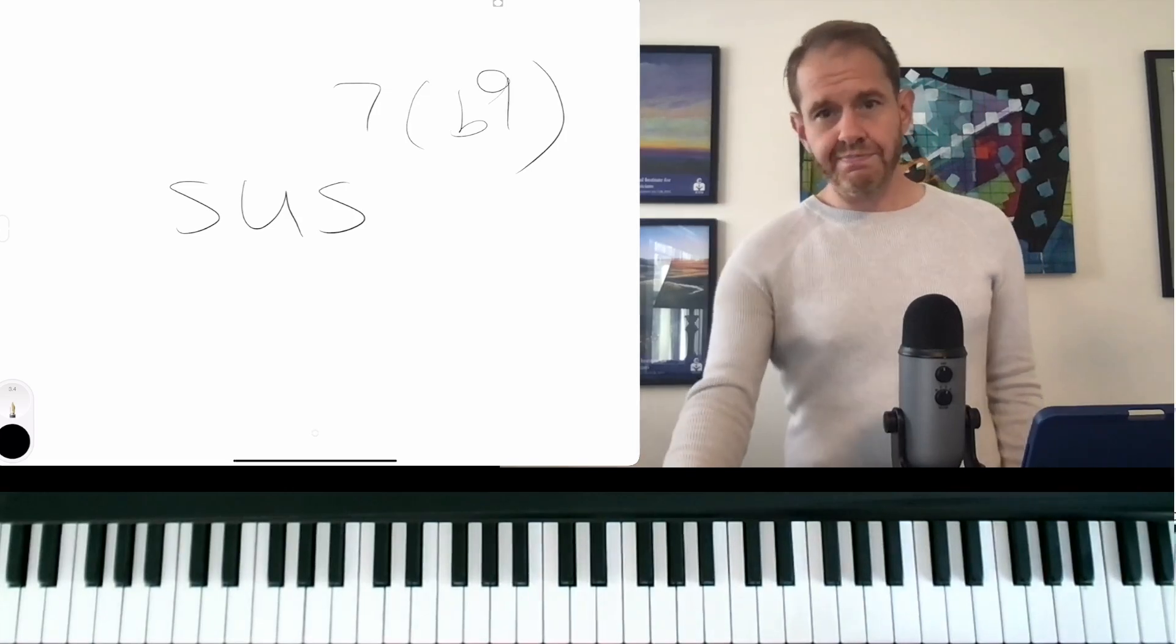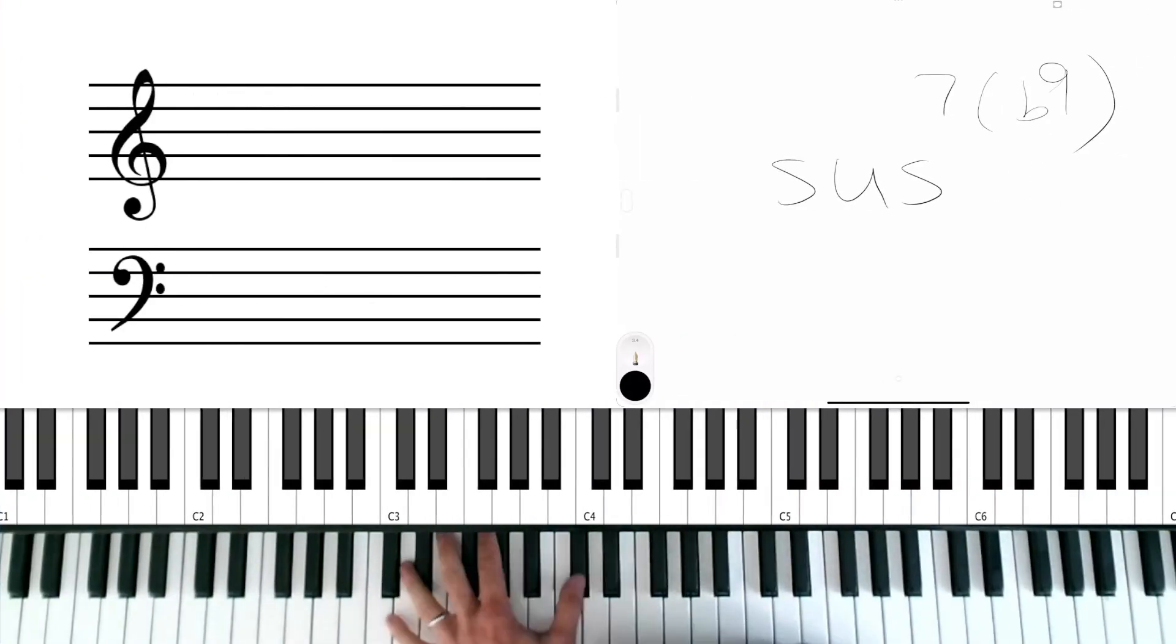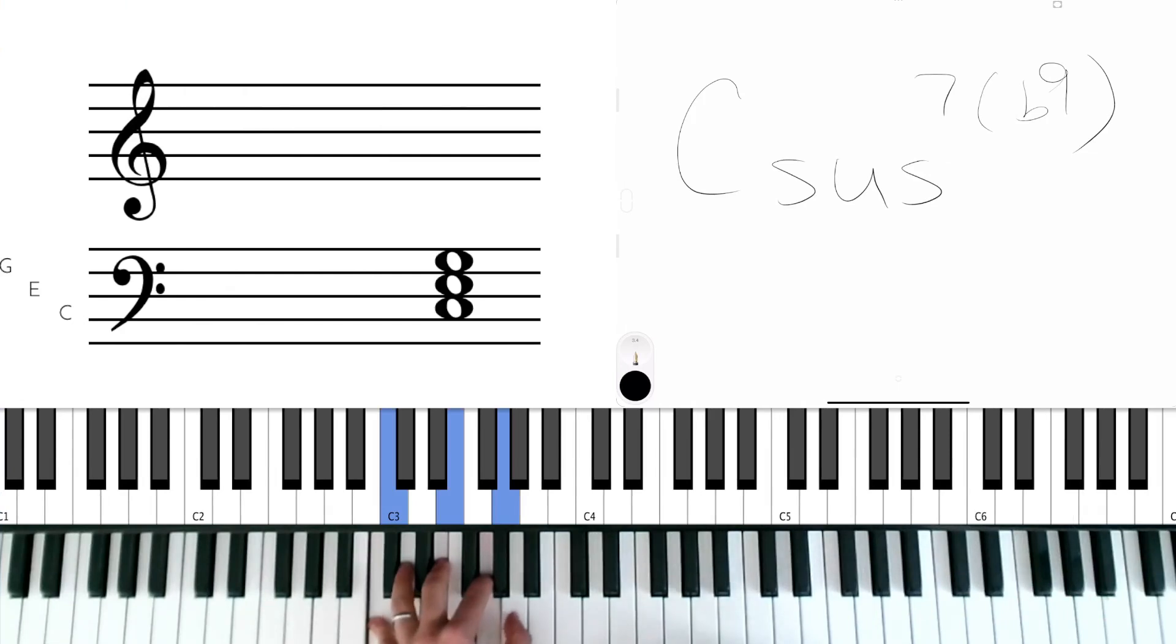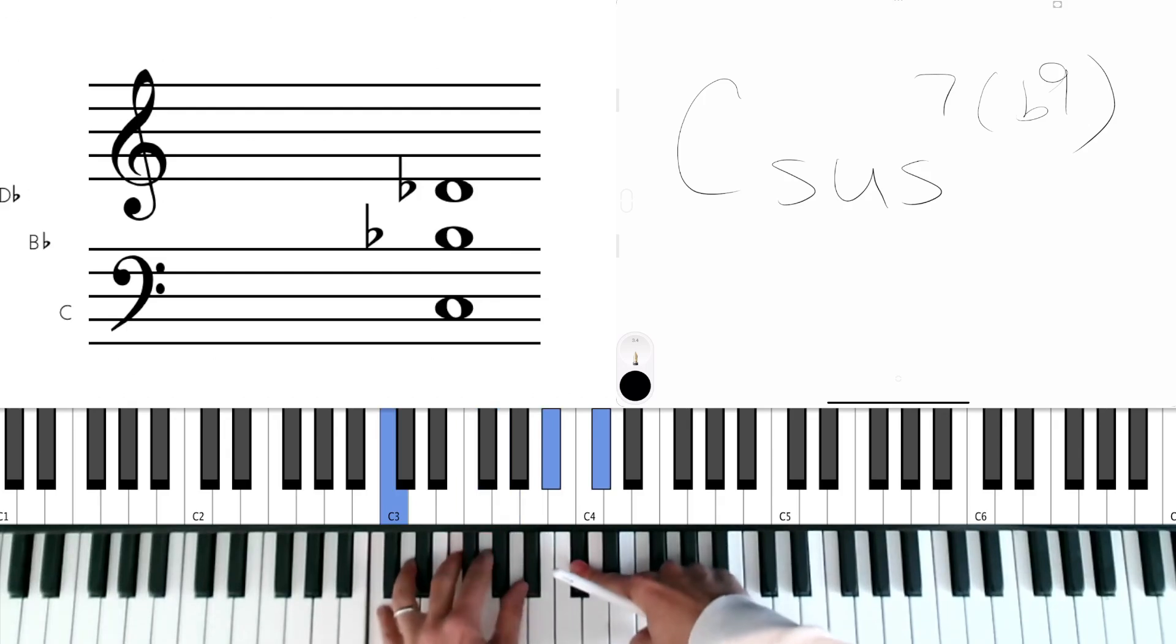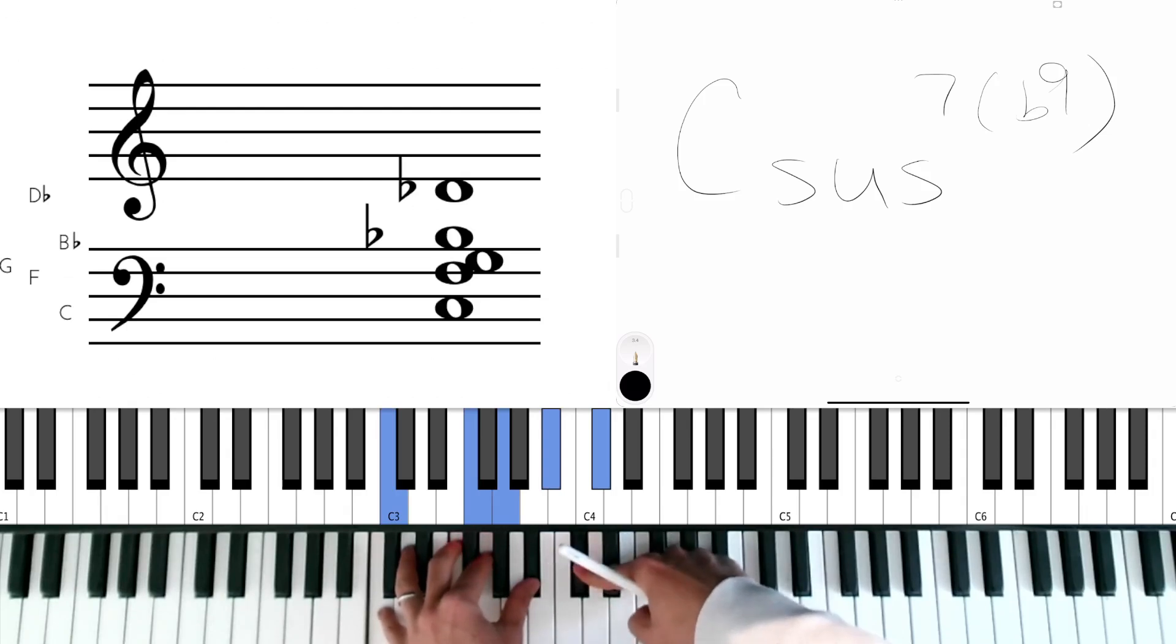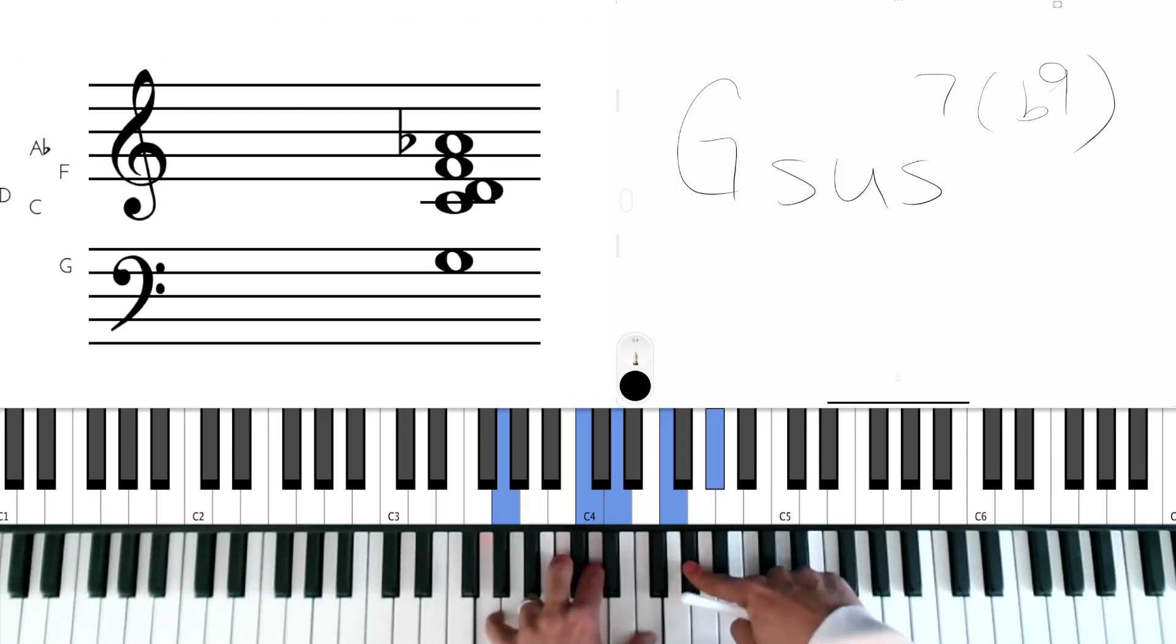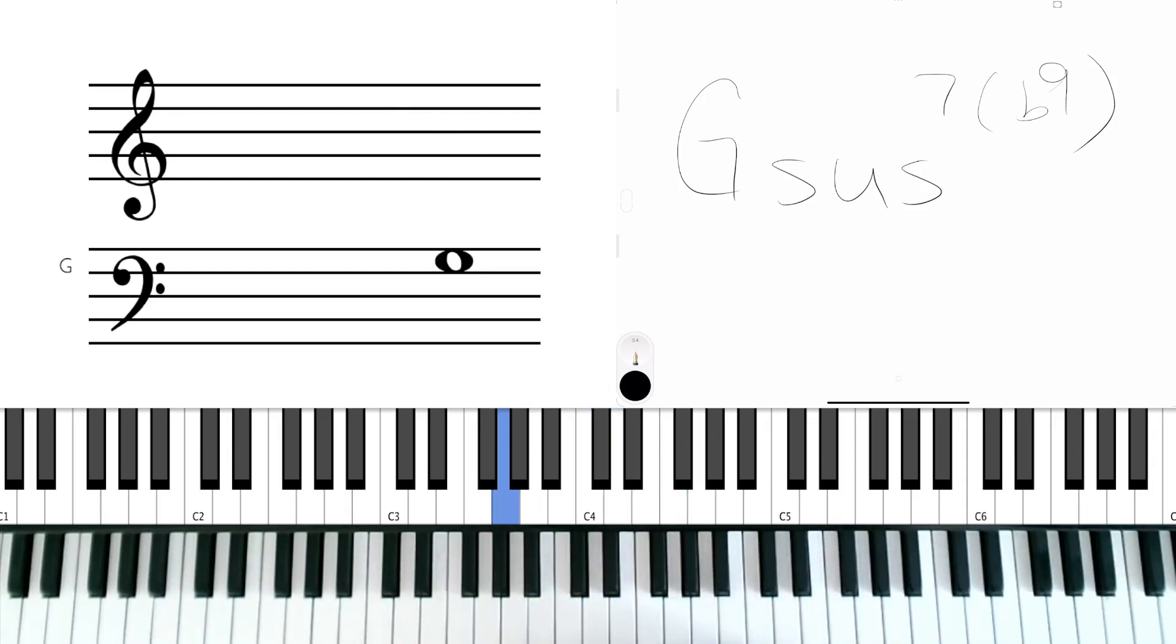So first of all, just like basics of what this chord is. So sus means that we're replacing the third with the fourth. So if we're doing C sus seven flat nine, instead of a C major or a C minor, it's going to be a C sus triad. Seven means dominant seventh here. Unless we see triangle seven, seven means dominant seventh. And then of course the flat nine would be this note here. Okay, let's just do another key. If we're going to do G sus seven flat nine, it'd be a sus triad, a dominant seventh, and the flat ninth.